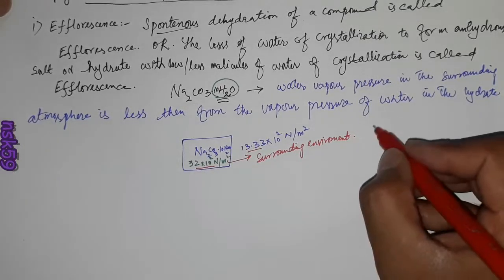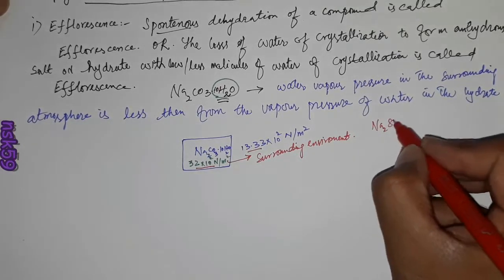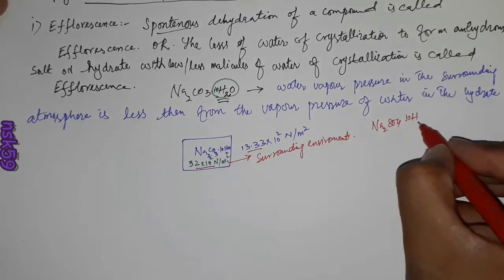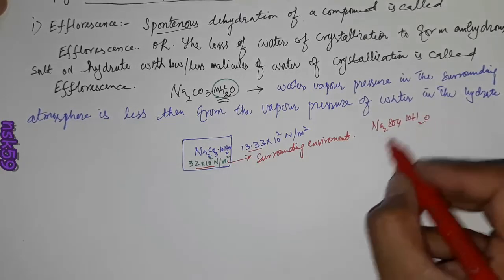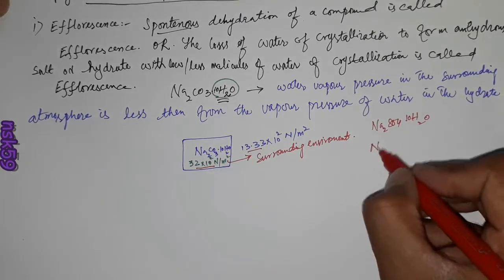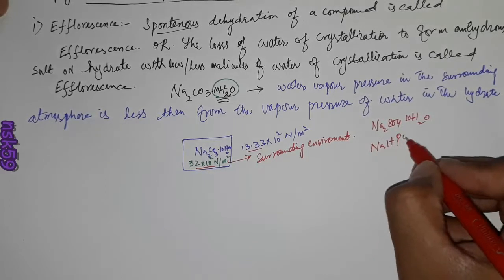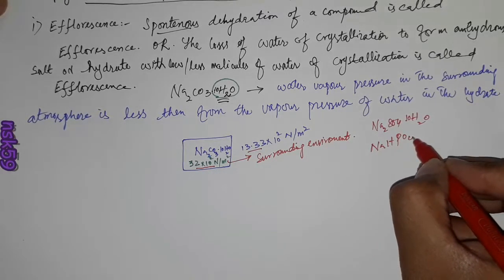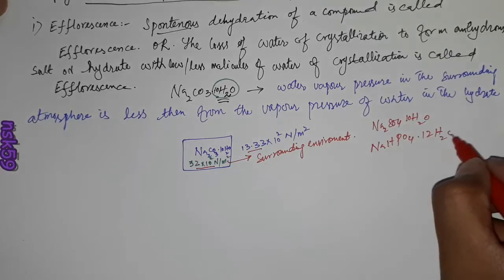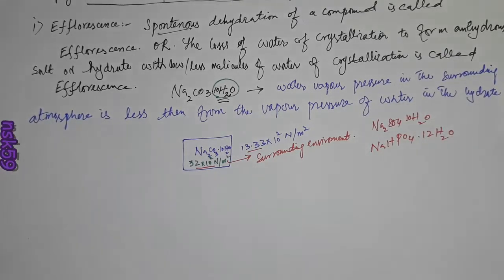Other examples of efflorescent substances are sodium thiosulphate and sodium biphosphate — they may also lose their water of crystallization to form some lower hydrate or to form an anhydrous salt.